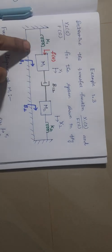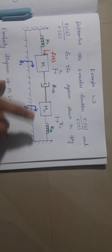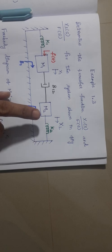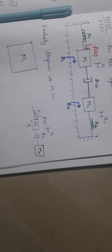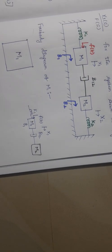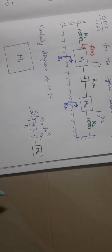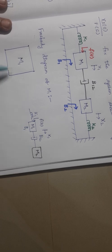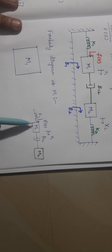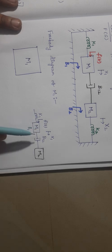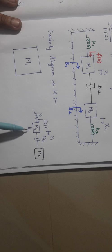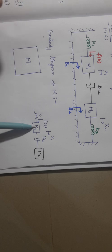From the diagram it is clear that we are having two masses, m1 and m2. In order to calculate the transfer function, we must draw the free body diagram. Now I am going to draw the free body diagram of mass m1. Consider mass m1 and count the number of elements connected to it. Here k1, b1, and b12 are the elements connected to mass m1 — so totally three elements.